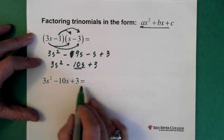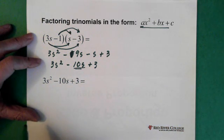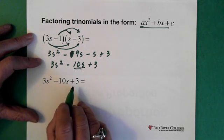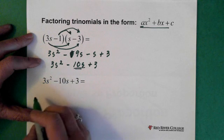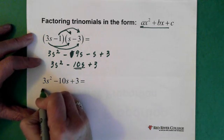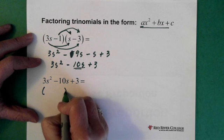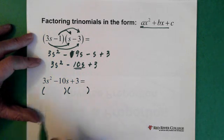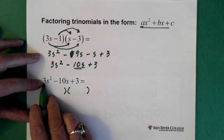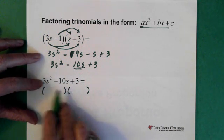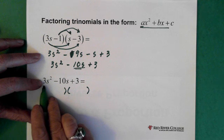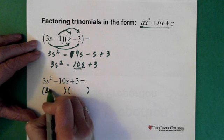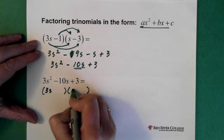So now, if we have this trinomial here and we want to factor it, my first step — using the trial and error method — is just to put down my brackets, because I know I'm going to have two factors. Then I ask myself: what here and here, multiplied together, will give me 3s squared? Well, I know it's 3 times 1. So I'm just going to put my 3s here and an s here.